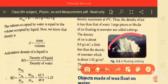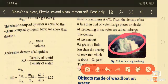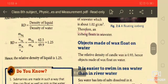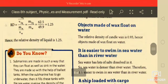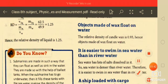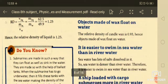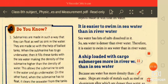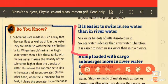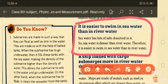Icebergs float in seawater because they have less density. Next, objects made of wax also float on water. The relative density of candle wax is 0.93, hence objects made of wax float on water. Next: It is easier to swim in seawater than in river water. This is a very important question.